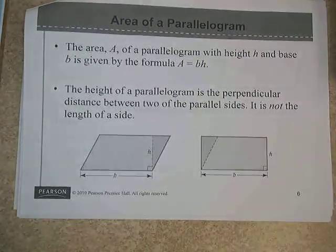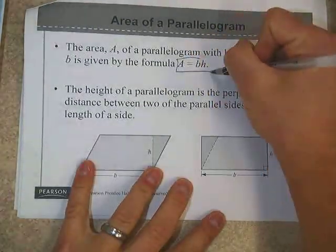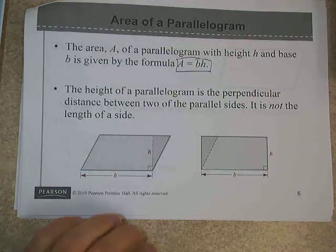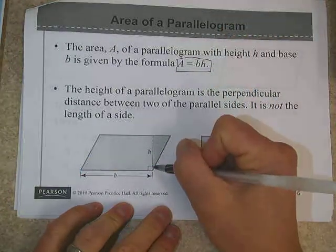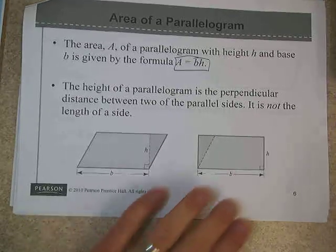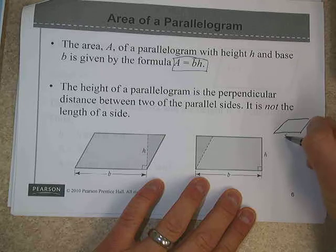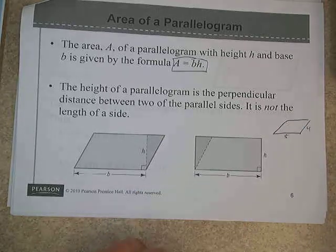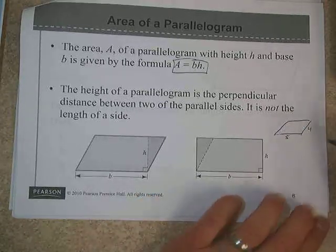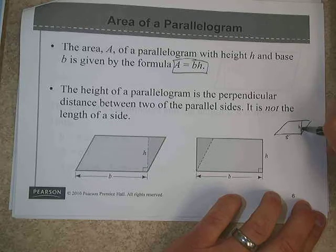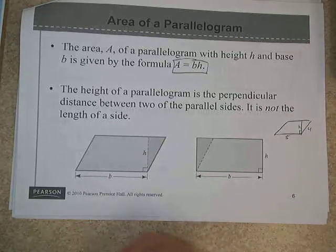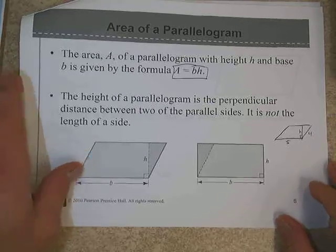We also have a parallelogram that we've dealt with. The area of a parallelogram formula is base times height. Now keep in mind that when we have a parallelogram, the height and the base need to be perpendicular to each other. So if we were given a shape that looked like this, and we knew this was 5 and that was 4, it wouldn't be enough to say just 5 times 4 because this 4 is not the height. The height would be that measure there that's perpendicular to the base.